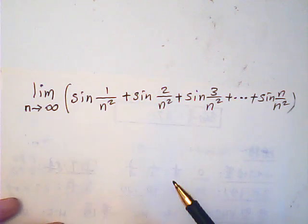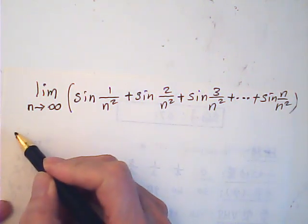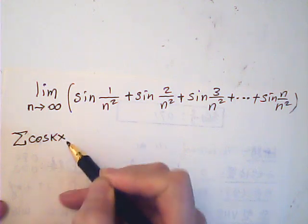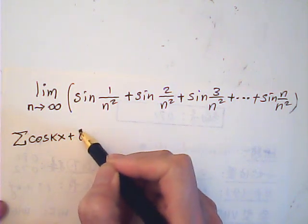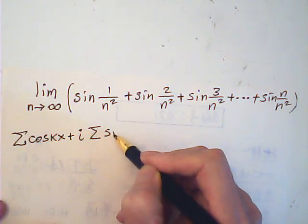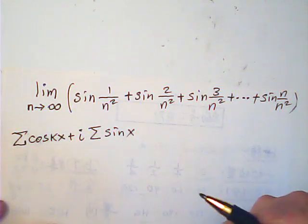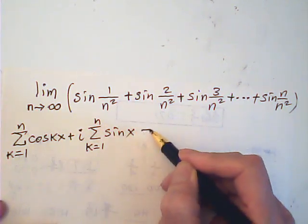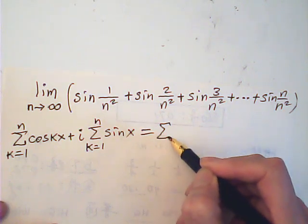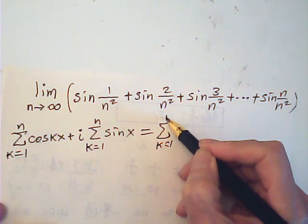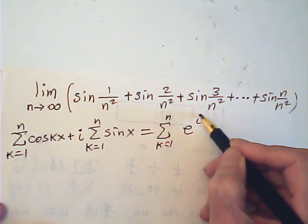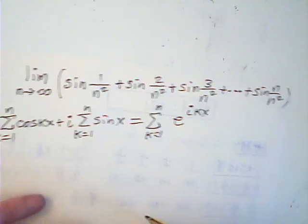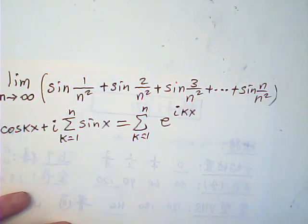I start with Euler's formula. That is the sigma cosine kx plus i sigma sine kx, right? And k from 1 to n is equal to sigma k from 1 to n of e to the ikx.